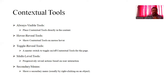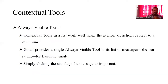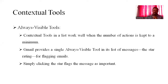The secondary menu shows a secondary menu, usually by right-clicking on the object. The always visible tool places the contextual tool in a list, which works well when the number of actions is kept to a minimum. Gmail provides a single always visible tool in its list of messages — star rating or flagging the image. Simply clicking the star flags the message as important.